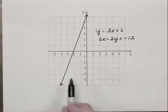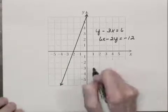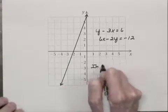That means that any solution of one of the equations is also a solution of the other. So this tells us that the system of equations has an infinite number of solutions.